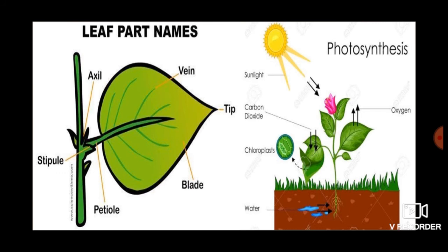Leaves take in carbon dioxide from the air through stomata and use the water that is absorbed by the roots for making food. The process by which green leaves prepare food using carbon dioxide, water, and sunlight is called photosynthesis.